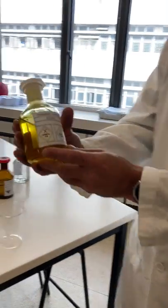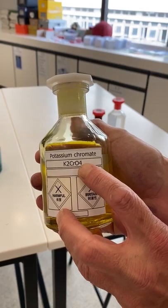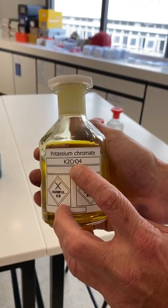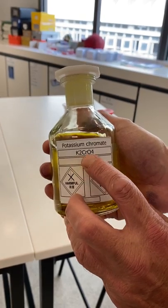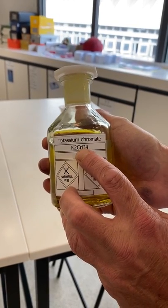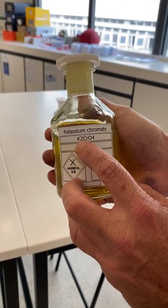potassium chromate. This contains the CrO4 2- ion. Now you've come across dichromate more often than you have chromate, but I hope you can appreciate the oxidation number of chromium here is +6 because we've got two potassium, so